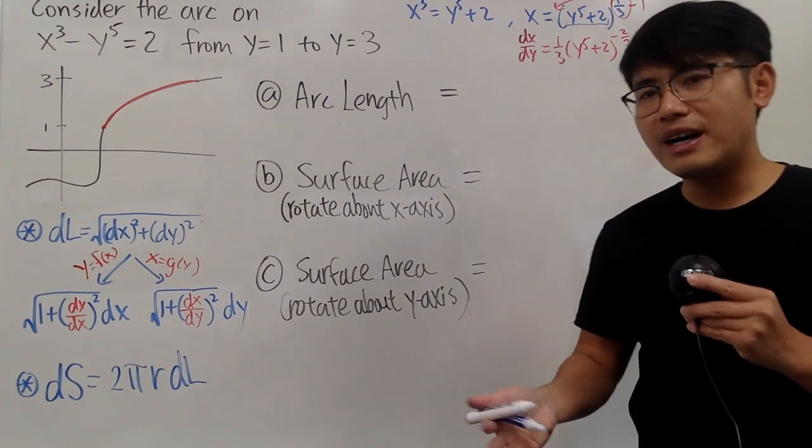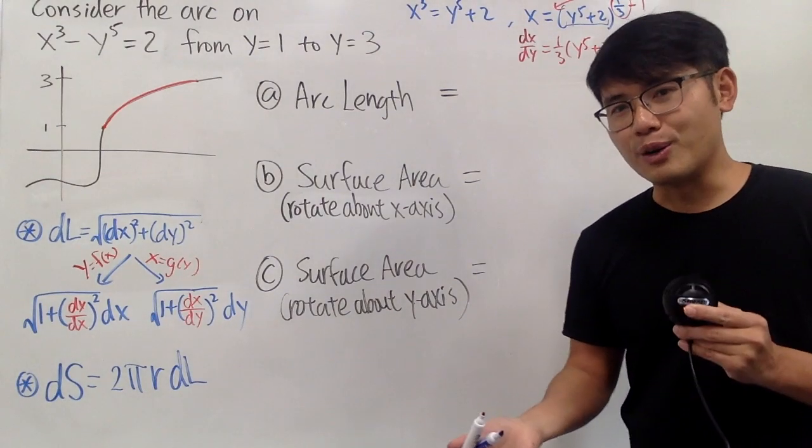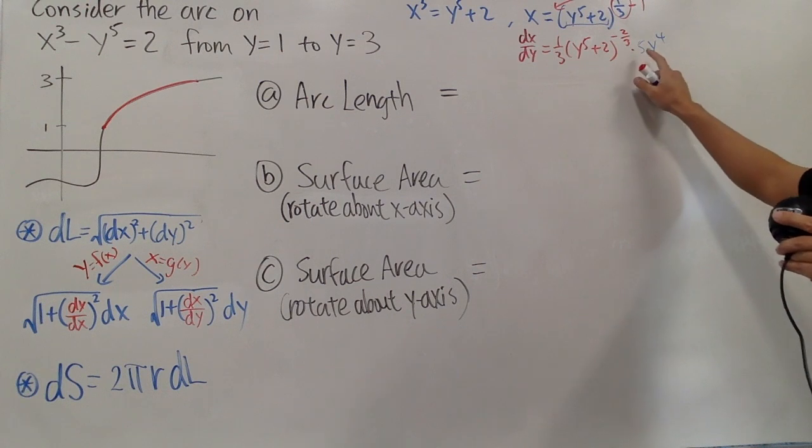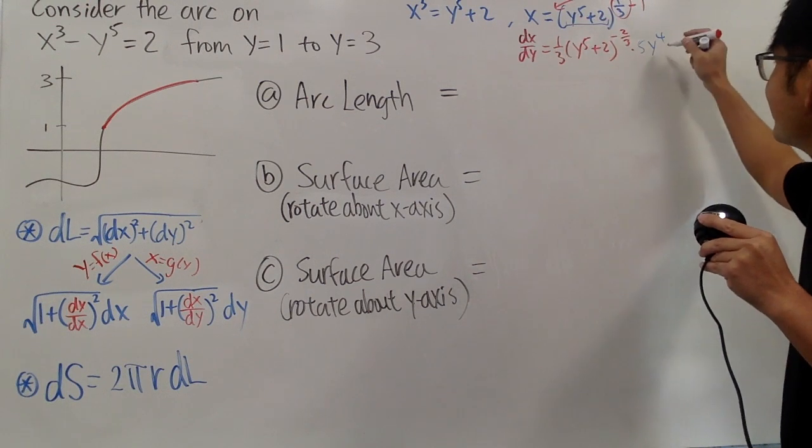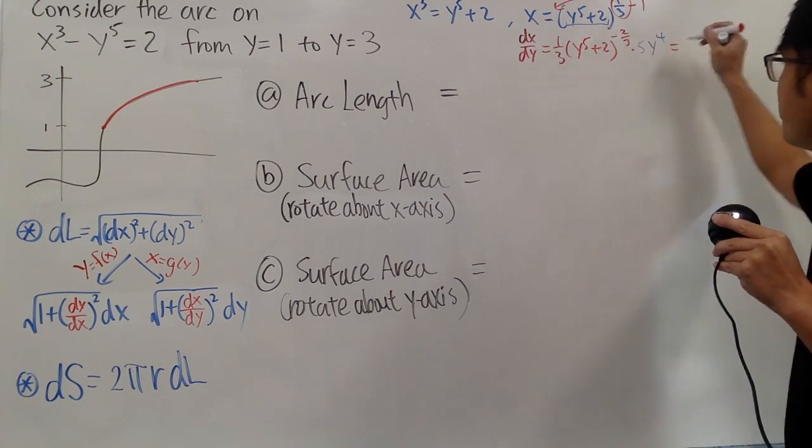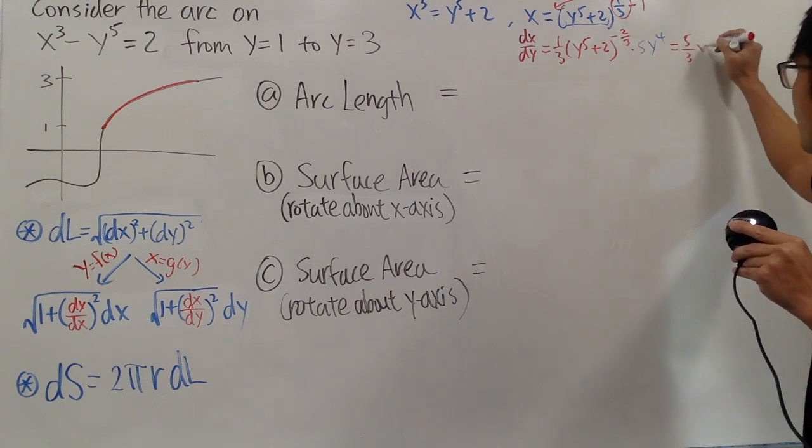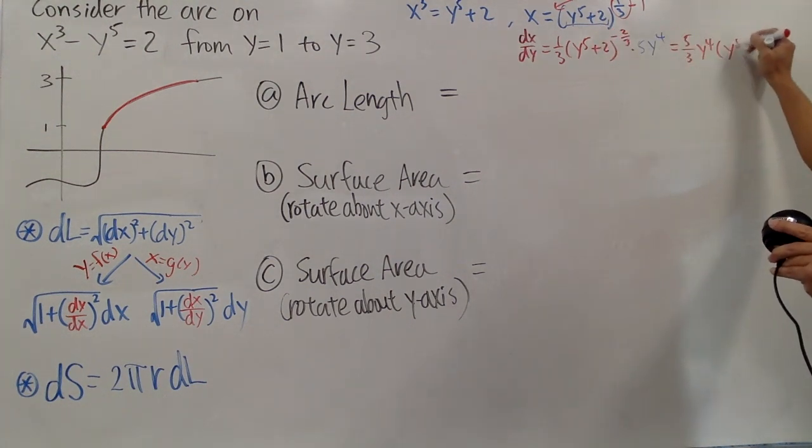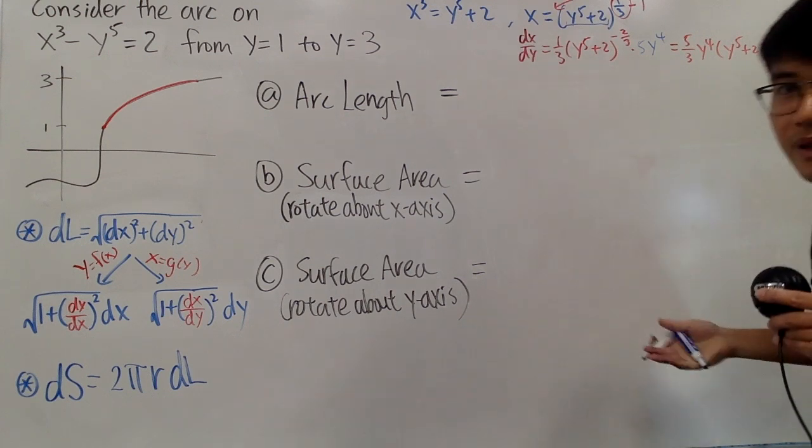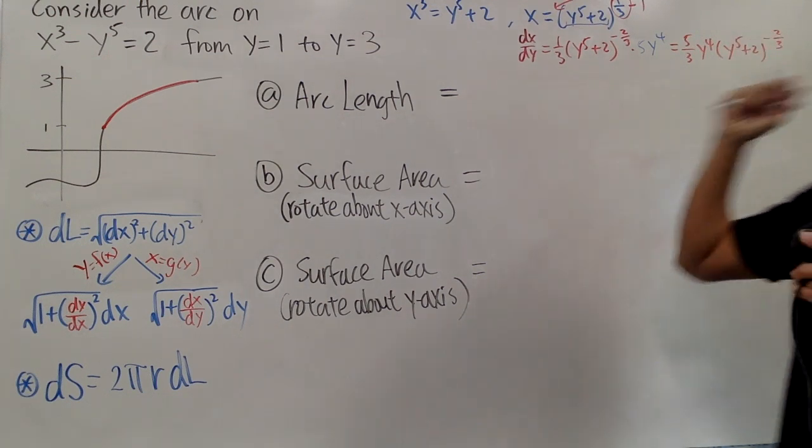And right here, there's nothing too much we can simplify, and in the end, we'll just be using our calculator anyway, but I do want to put the y on top of this. So this right here is just 5 over 3, and let's write down the y to the fourth power first. Let me just write it down like this. It's easier to put it down like this on the calculator. So this right here will be our derivative.